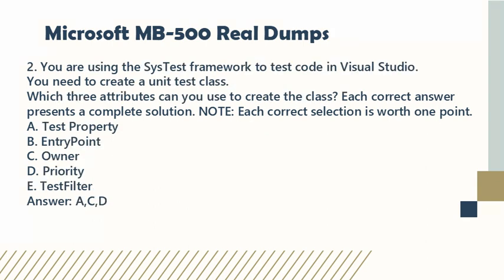Question 2. You are using the SysTest framework to test code in Visual Studio. You need to create a unit test class. Which three attributes can you use to create the class? Each correct answer presents a complete solution. Each correct selection is worth 1 point. A. Test property. B. Entry point. C. Owner. D. Priority. E. Test filter. Answer: A, C, D.